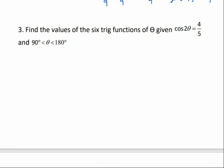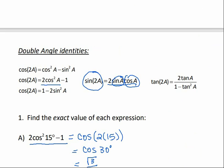Now let's find the values of the six trig functions of theta, given cosine of 2 theta equals 4 fifths and theta is between 90 and 180 degrees — so we're in the second quadrant. We're given cosine of 2 theta, and we need cosine of theta, sine of theta, tangent of theta, and their reciprocals. Looking at the double angle identities, we can use cosine of 2 theta to find sine of theta and cosine of theta. Let's start with: cosine of 2 theta equals 1 minus 2 sine squared theta.